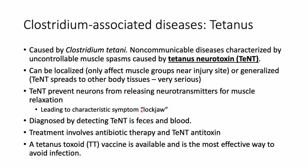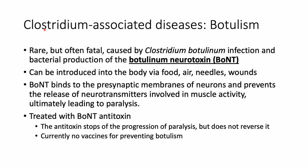A characteristic symptom of tetanus is lockjaw — when the muscles in the face and jaw cannot relax and the patient cannot open their mouth. Tetanus is diagnosed by detecting tetanus neurotoxin in feces and blood, and treated with antibiotic therapy targeting Clostridium tetani plus an antitoxin. The tetanus toxoid vaccine is the most effective prevention, sensitizing the immune system to the tetanus neurotoxin.